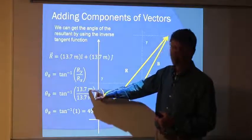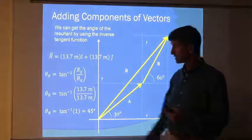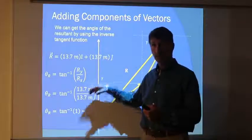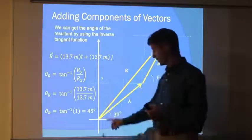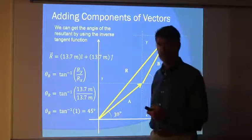Alright. 13.7 meters divided by 13.7 meters. You know, it's sort of fortuitous that it goes in that direction. We know that the inverse tangent of 1, y is the same ratio as 1, would be a 45-degree angle. And that's what we get here.